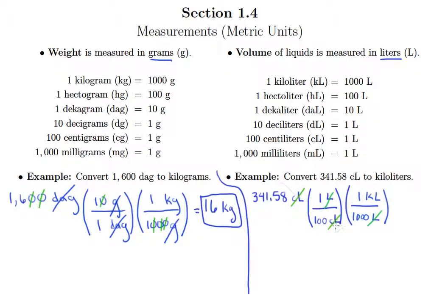And so what am I doing? I've got 341.58 up top. On bottom, I have 100 times 1,000. So the result of this is that I get 341.58 over, well, there's a total of five zeros. So one followed by five zeros on bottom, kiloliters.